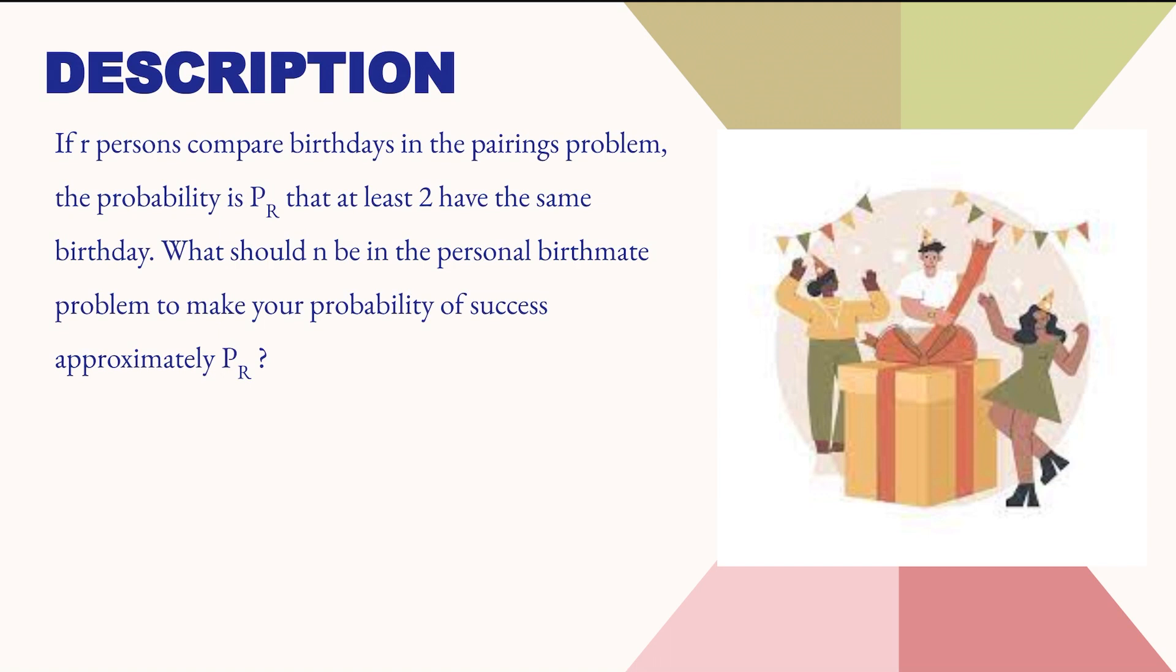In this problem, we have r persons who compare their birthdays with each other. The probability that at least two have the same birthday is P_r. We need to find n persons such that the probability of matching at least one birthday when I compare mine with those n persons is approximately equal to P_r.